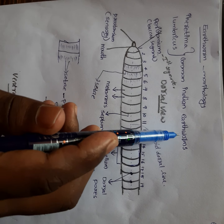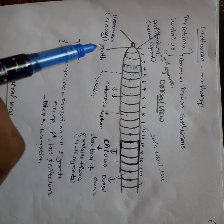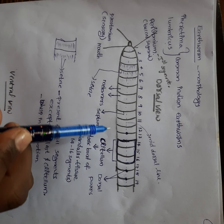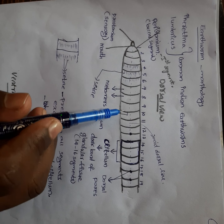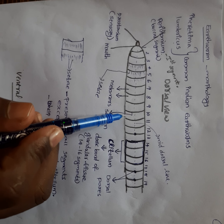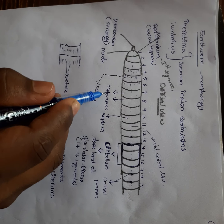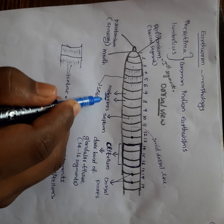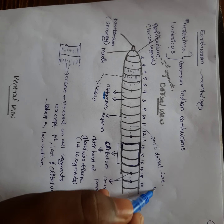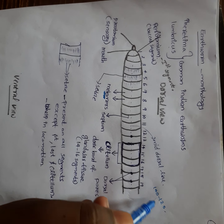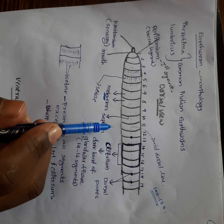The common Indian earthworms are Pheretima and Lumbricus. The body of earthworm is made up of different compartments, which we can call metamers. There will be 100 to 120 metamers or compartments in a single earthworm.